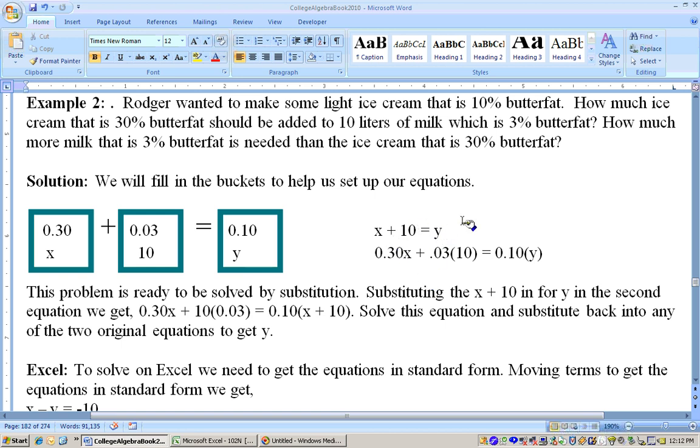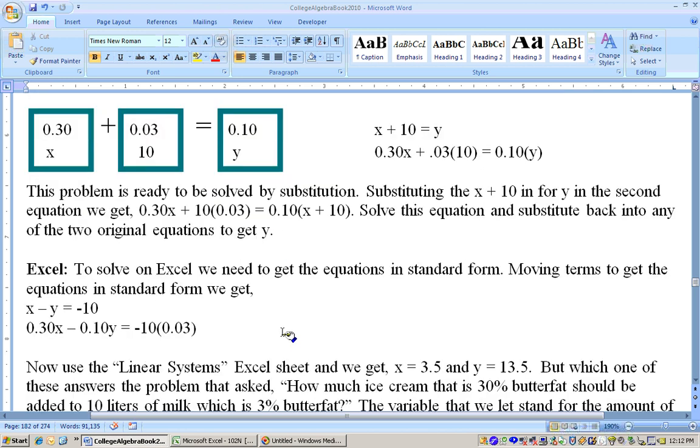Now, to solve it on Excel, you'd have to take the Y to the left and then the 10 to the right. Anytime you move a term, it changes signs. So you would have X minus Y equals negative 10. That's this equation right here. Same way with this. We would have to take this 0.1Y to the left, so we'd have 0.3X. Taking this to the left will make it negative. Minus 0.1Y equals, we'll have to take this to the right. So just move this to the left and this to the right. They'll change sign, and you'll end up with this system of equations right here.